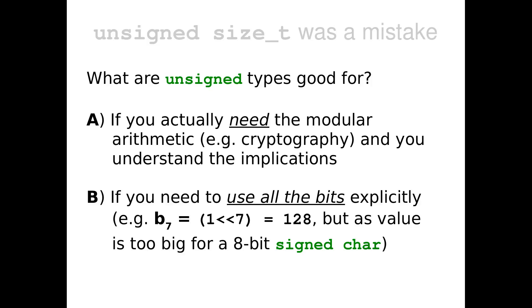Another very common use case, if you need to use all the bits explicitly. For example, on an 8-bit per character machine, the most significant bit of a character, B7, is 1 shifted left 7 times. The value is 128. But this value is too big for an 8-bit signed character. So if you want to use all the bits, if you don't care about the numeric value of that byte, but you care about the bits, then using an unsigned character is probably the correct choice.